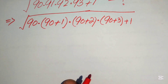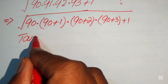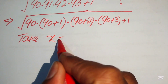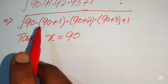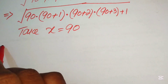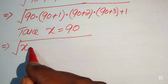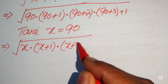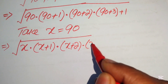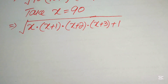Now we take x equals to 90. So if you take x equals to 90, then you substitute all the 90s with x, so that our expression will be written as x into (x+1) into (x+2) into (x+3) plus 1, and here we just need to simplify this expression.